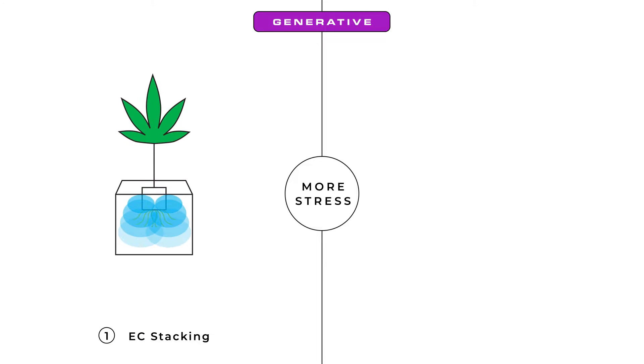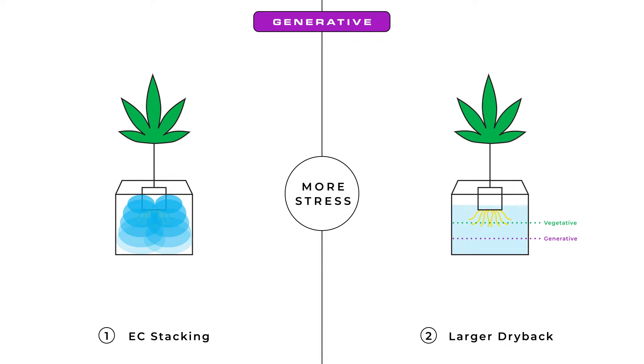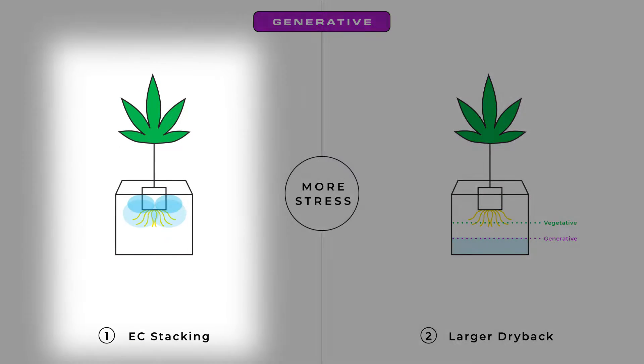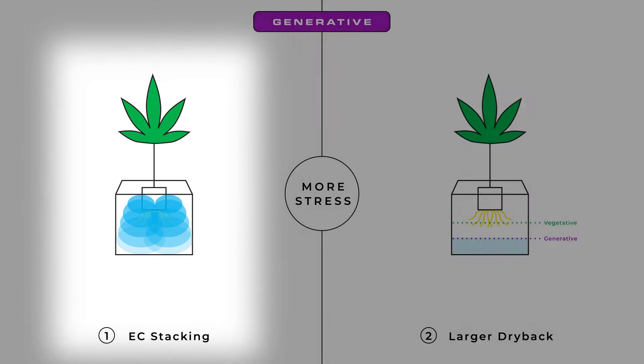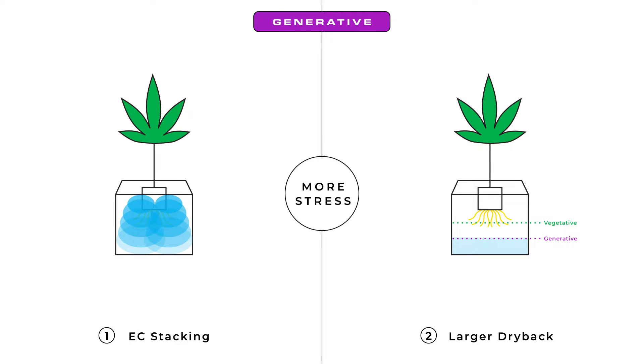To promote generative growth we will induce water stress by increasing substrate EC. This is done in two ways: by utilizing a technique called EC stacking and/or creating a larger dryback. EC stacking is done by using irrigation events to maintain proper VWC percent to keep your plants from wilting while allowing little to no runoff.